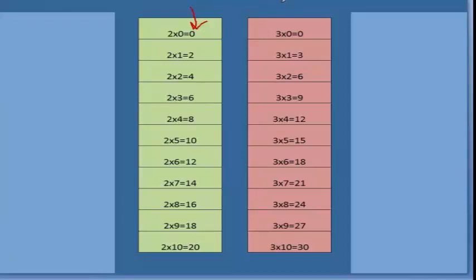Then I'm going to go over and do the same thing with the 3s. 3 times 0 is 0, 3 times 1 is 3, 3 times 2 is 6, 3 times 3 is 9, 3 times 4 is 12, 3 times 5 is 15, 3 times 6 is 18, 3 times 7 is 21, 3 times 8 is 24, 3 times 9 is 27, 3 times 10 is 30.